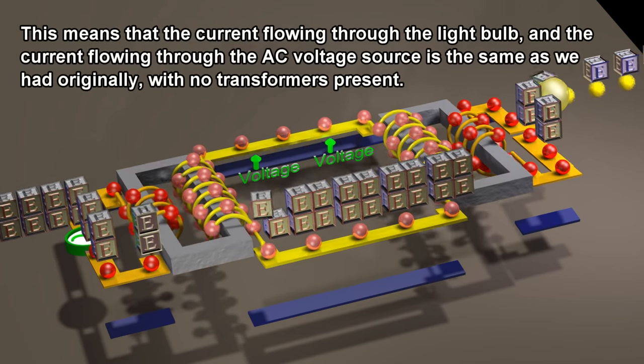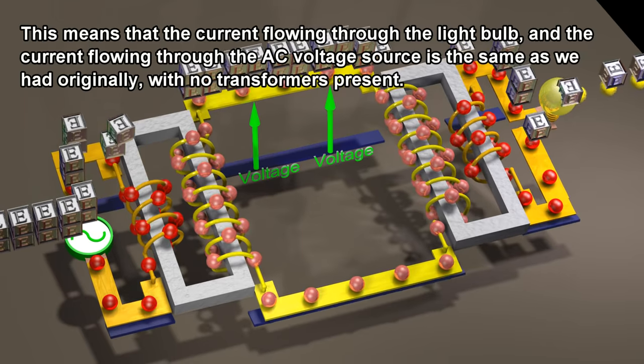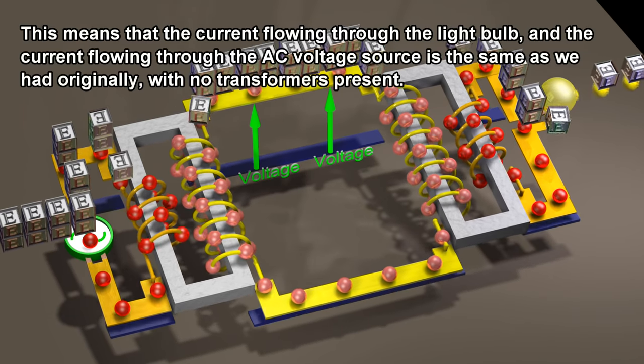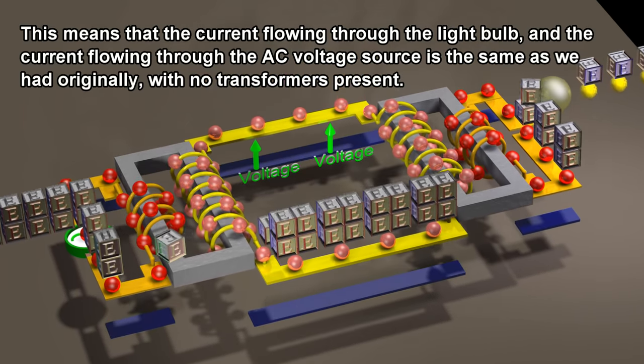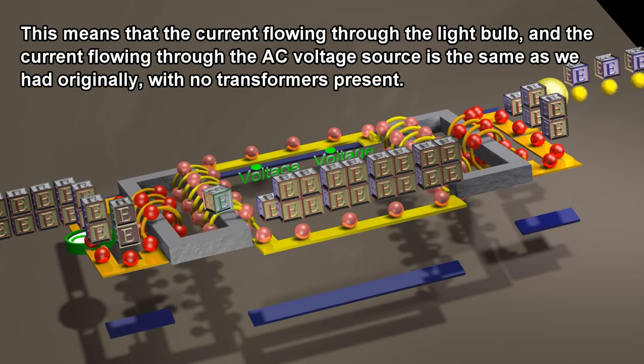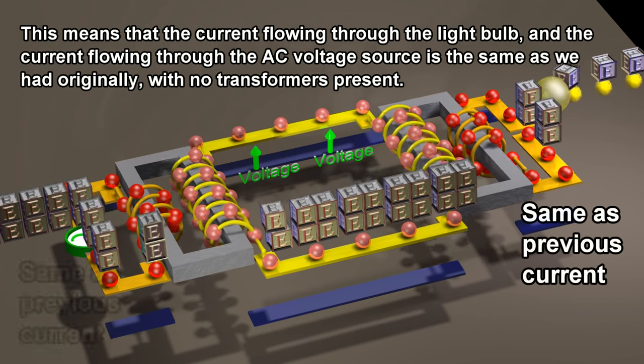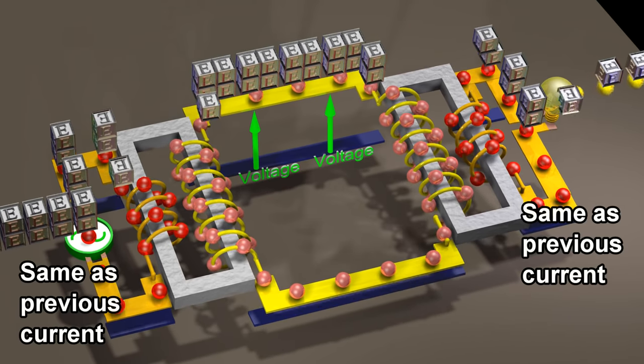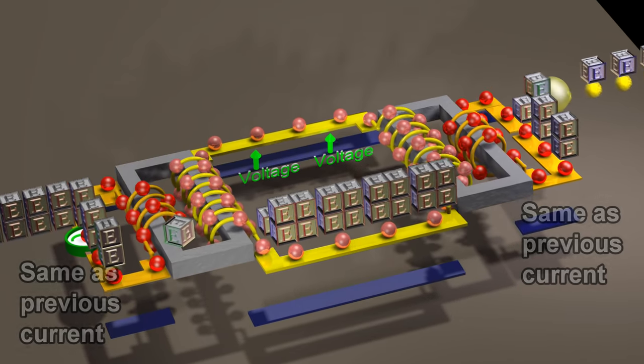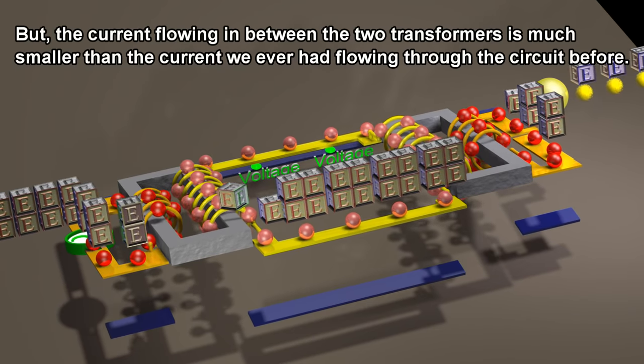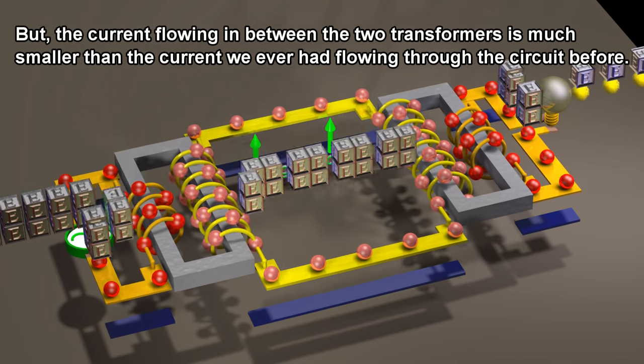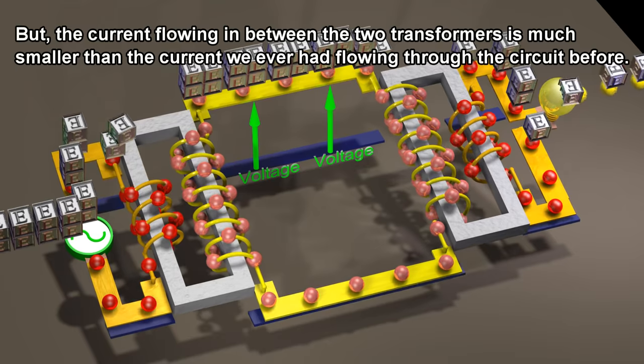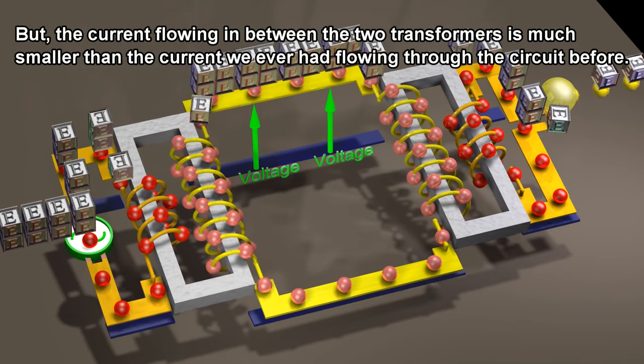This means that the current flowing through the light bulb and the current flowing through the AC voltage source is the same as we had originally, with no transformers present. But the current flowing in between the two transformers is much smaller than the current we ever had flowing through the circuit before.